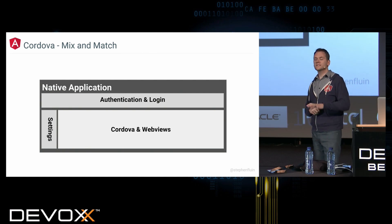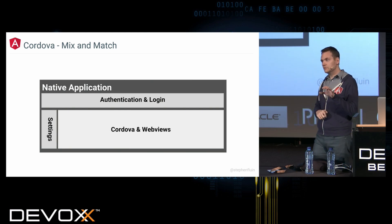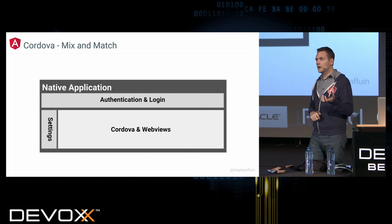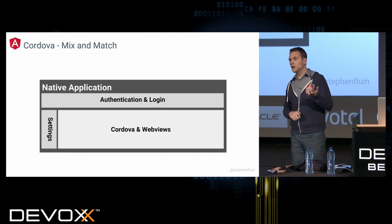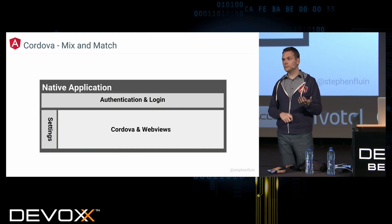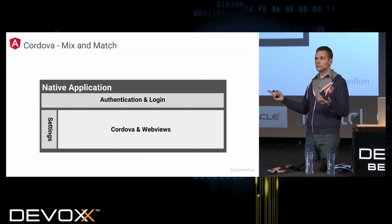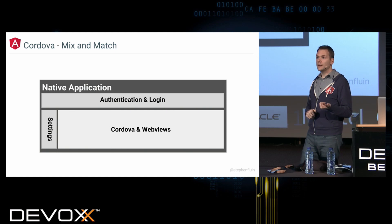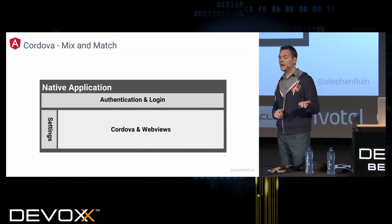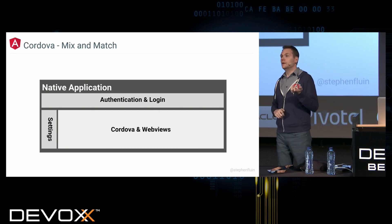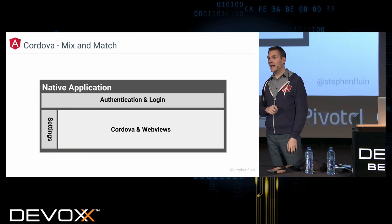Another thing you can do with Cordova is mix and match it with native components — native Java or iOS elements. Think of an architecture where you take a native application targeting iOS or Android, build a native authentication and login step for that smooth first-touch experience pulling in Facebook and Google APIs, expose settings natively, but then for the rest of your application share that code with the back end of your web application. You can embed a Cordova WebView in that part of your application and the handoff will happen seamlessly.